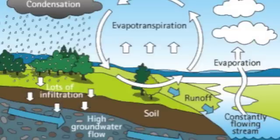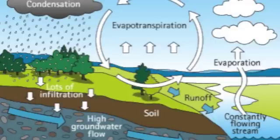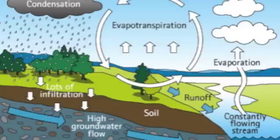Vapor made by evaporation, the clouds are made by condensation. Rain and snow is precipitation, water collects with accumulation.